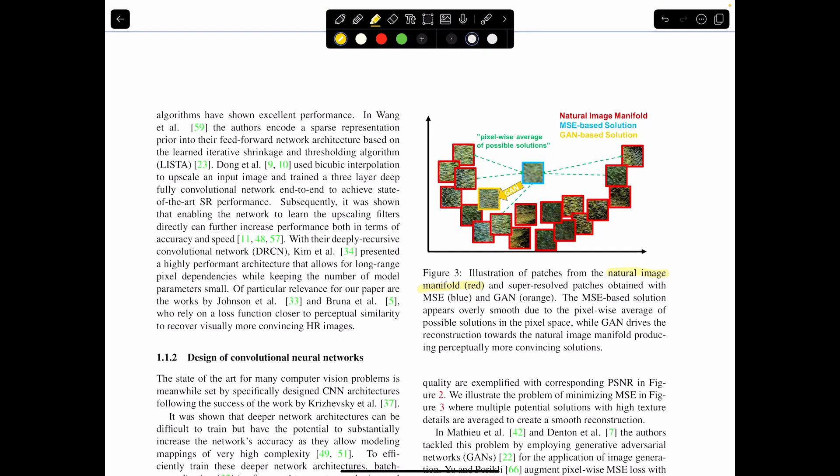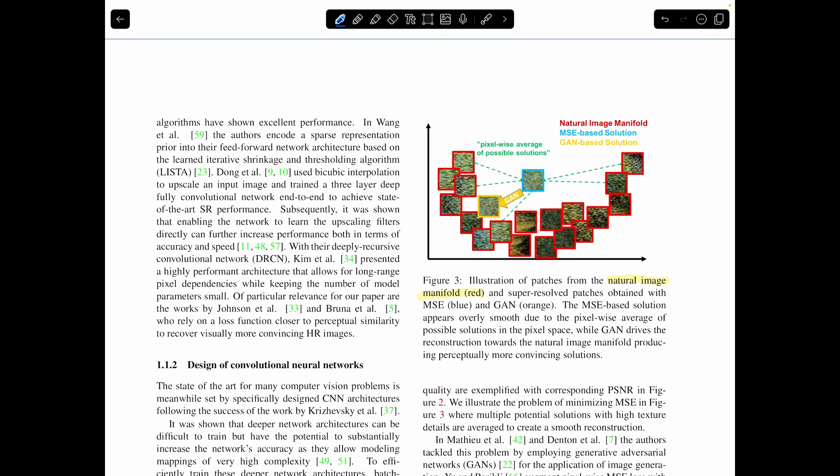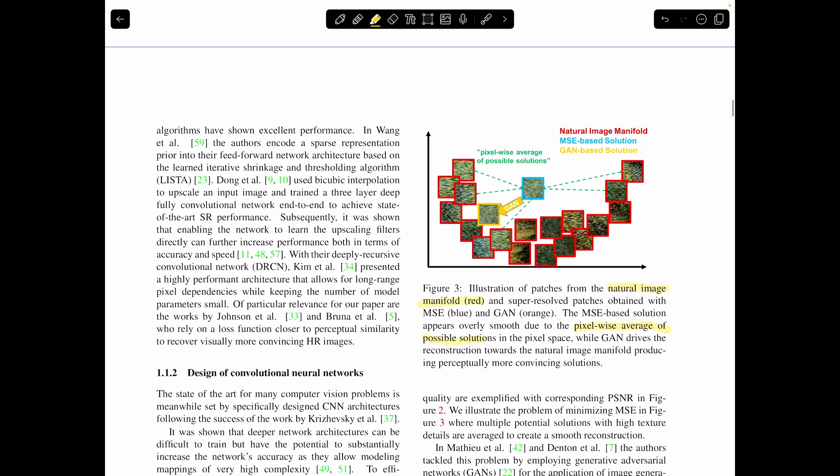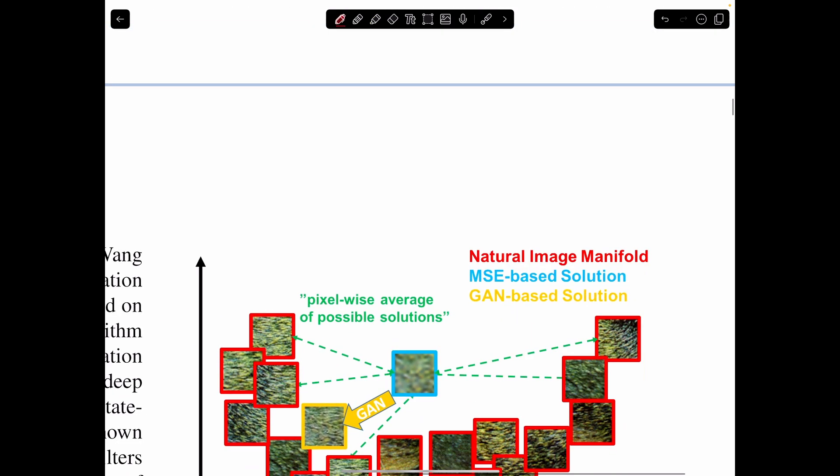Alright, so now what this figure is telling us is that previous works that are using mean squared error are going to create super-resolutions that are far away from the natural image manifold. So they represent a mean squared error solution in here. And the natural image manifold is something like this. And so the mean squared error isn't really able to place itself in this natural image manifold. And the reason is because mean squared error often creates a pixel-wise averaging of possible solutions.